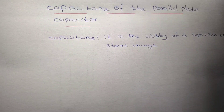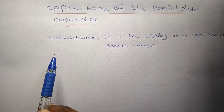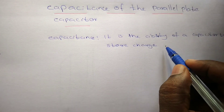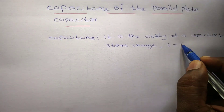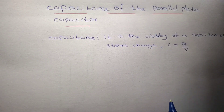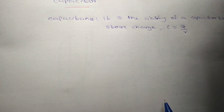Hello students, welcome back to my channel. In this video I am going to discuss the capacitance of a parallel plate capacitor. In a previous video we already discussed what a parallel plate capacitor is. Capacitance means the ability of a capacitor to store charge. Capacitance C is equal to Q by V — we already discussed that in the capacitor introduction part.